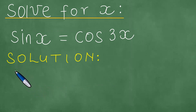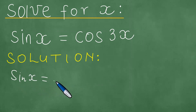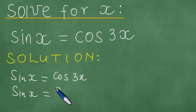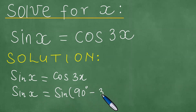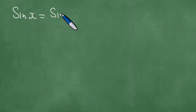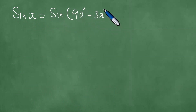So we have sine of x equals cosine 3x, and this means we have the sine of x equals the sine of 90 degrees minus 3x, which is the same as the sine of 90 degrees minus 3x.